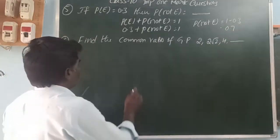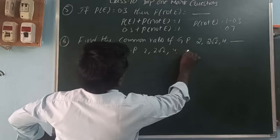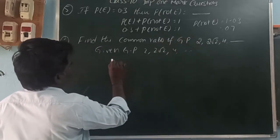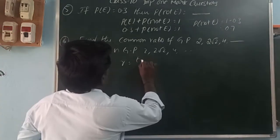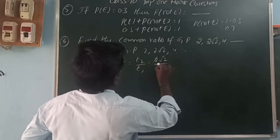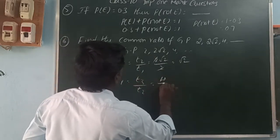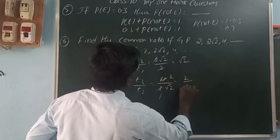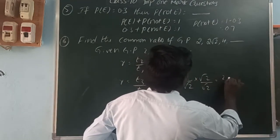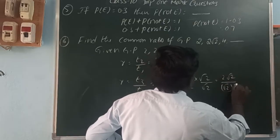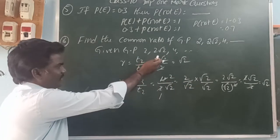Find the common ratio of the GP: 2, 2√2, 4, and so on. The common ratio R is T2 divided by T1, that is 2√2 by 2, which simplifies to √2. Verify with T3/T2: 4 divided by 2√2. Rationalizing by multiplying by √2/√2 gives 2√2 divided by 2, which is √2. The common ratio is √2.